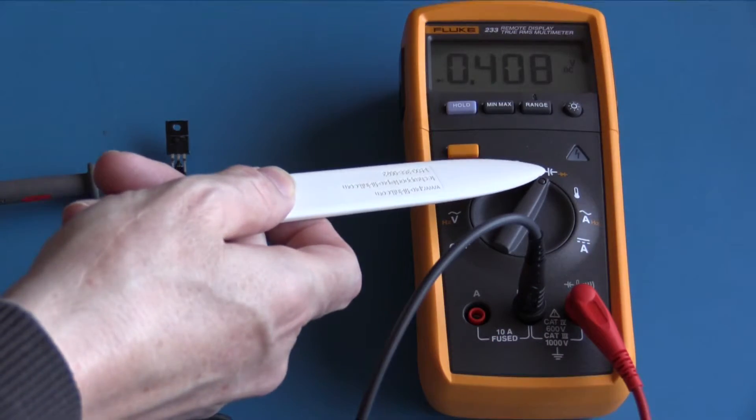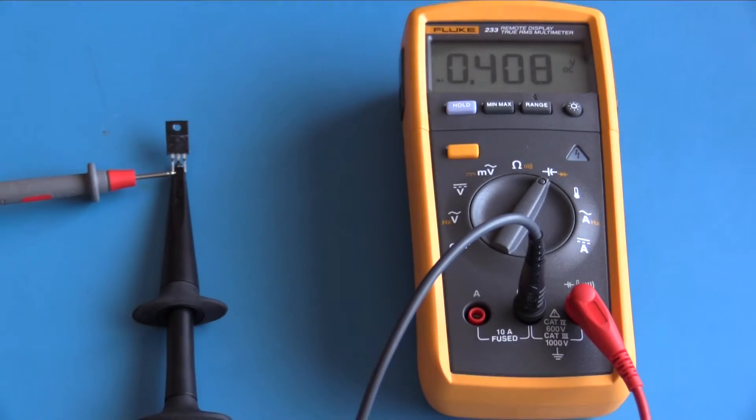I have now selected diode. The common test lead is hooked up to the cathode. My other test lead is hooked up to the anode. It's showing a voltage drop of approximately 0.4 volts.